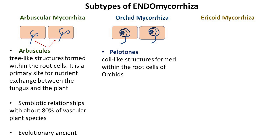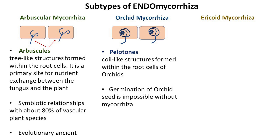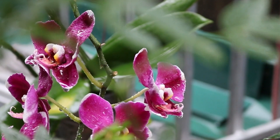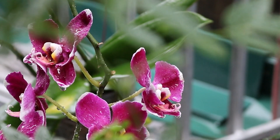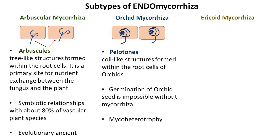In the case of orchid mycorrhiza, fungi form different structures inside the root cells called pelotons, which have a coil-like formation. Mycorrhizal association is essential for orchid seed germination and early growth. Due to a lack of carbon reserves in the seed, orchids solely rely on the fungal partner for carbon supply. Additionally, many orchids, particularly those lacking chlorophyll, practice obligate mycoheterotrophy, obtaining nutrients exclusively from the mycorrhizal fungi rather than through photosynthesis.